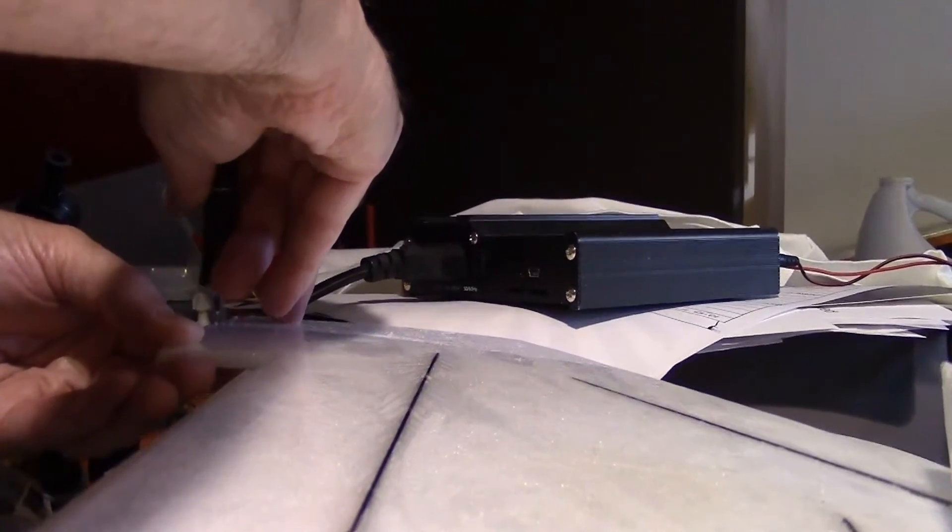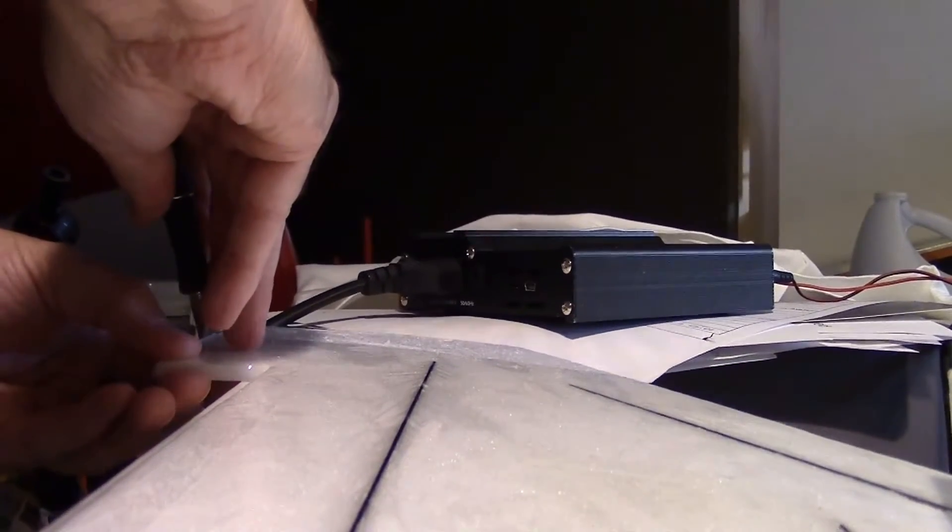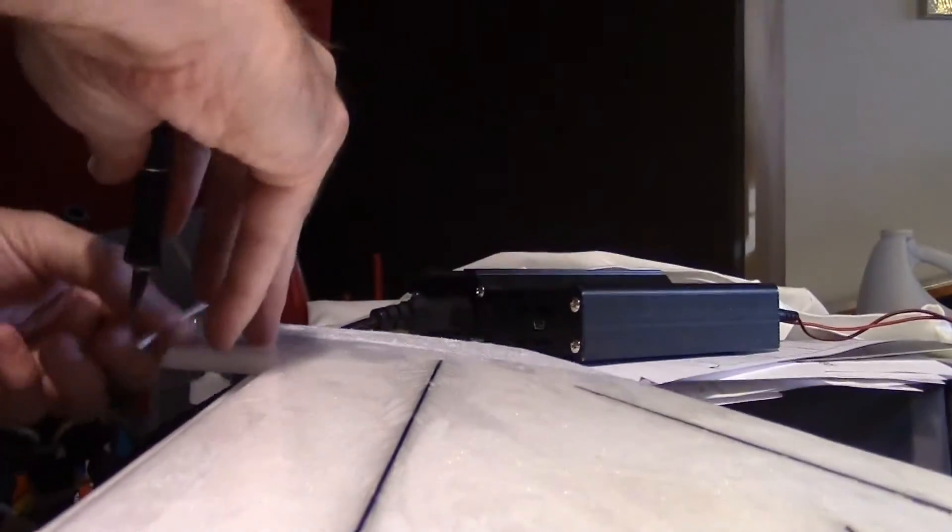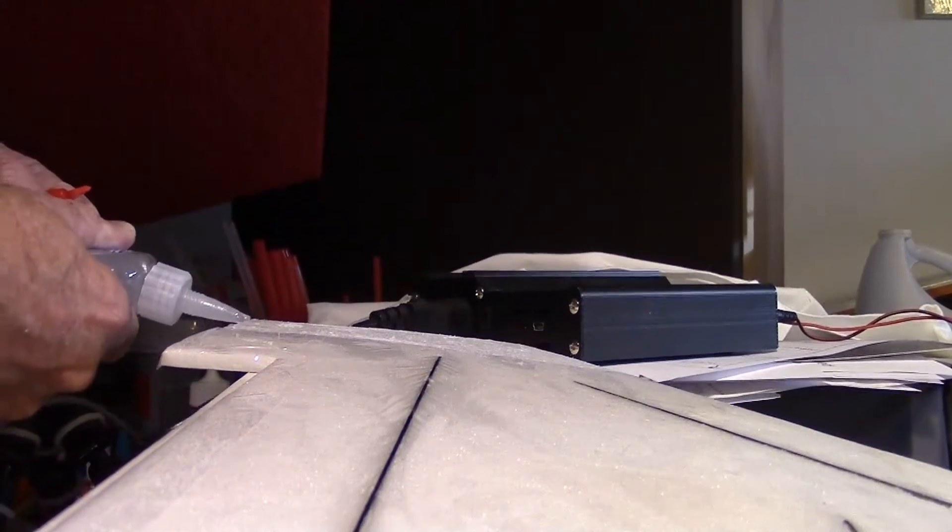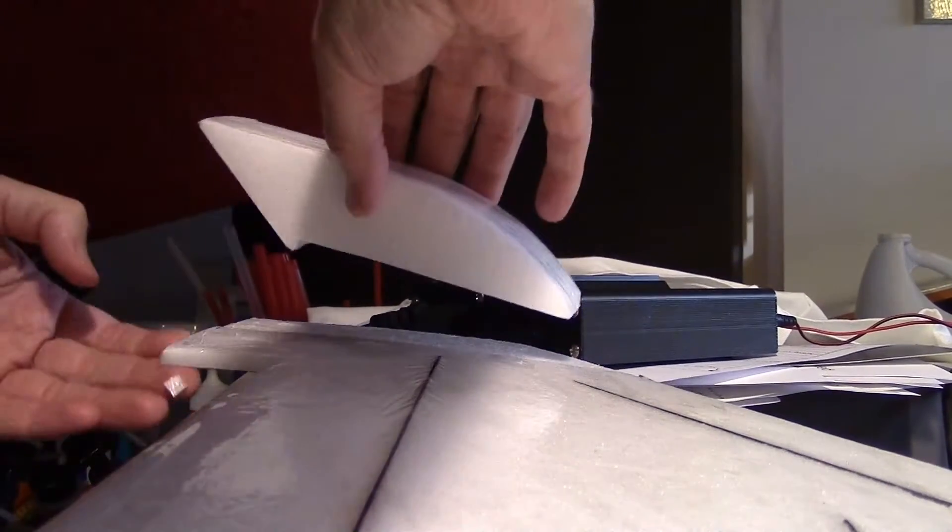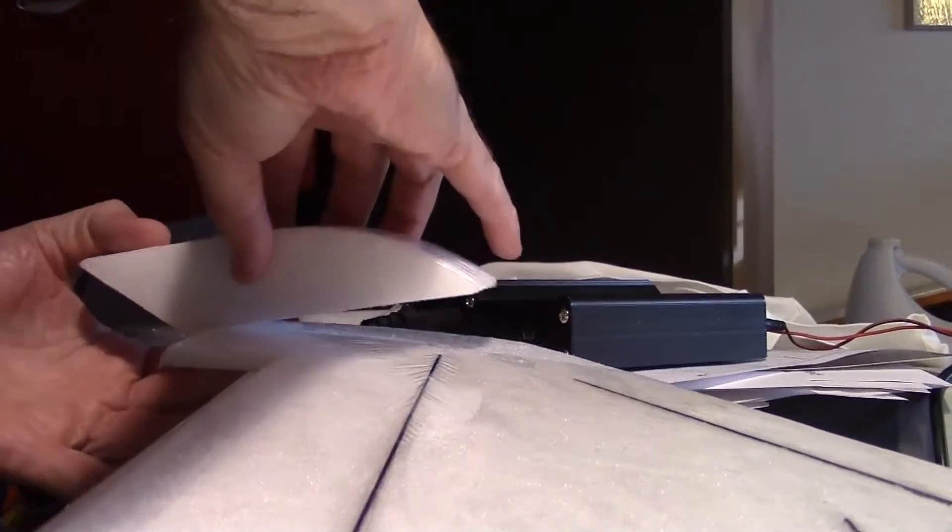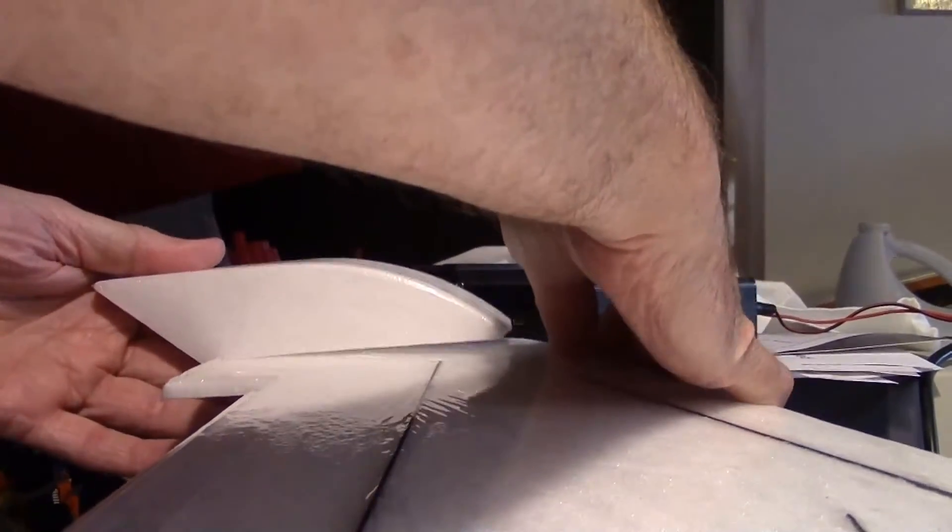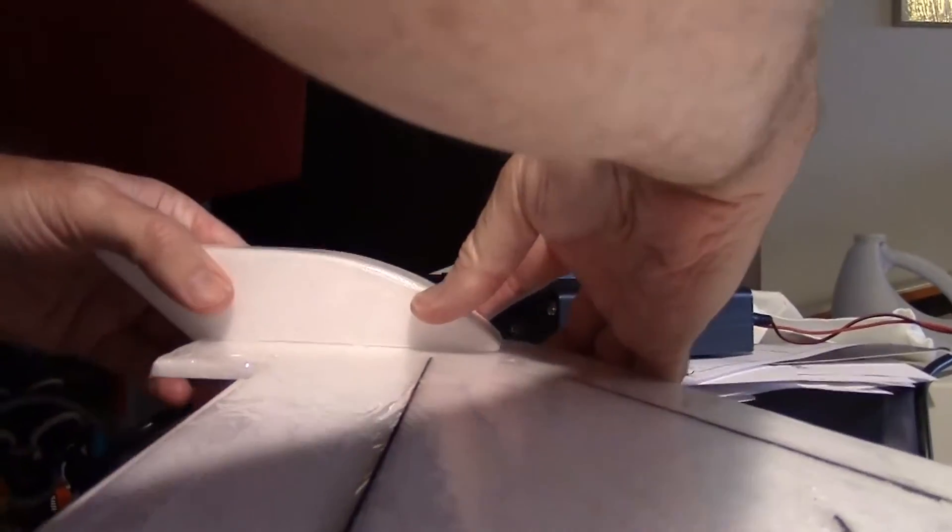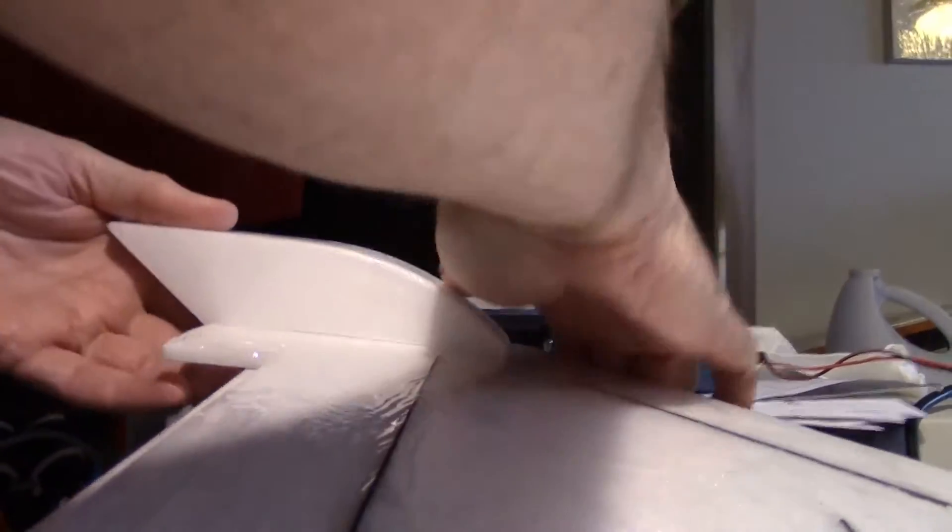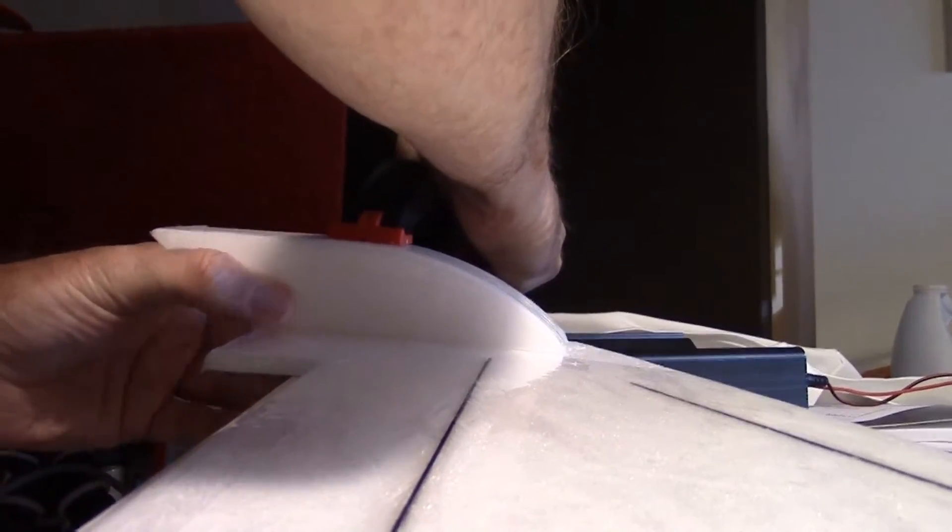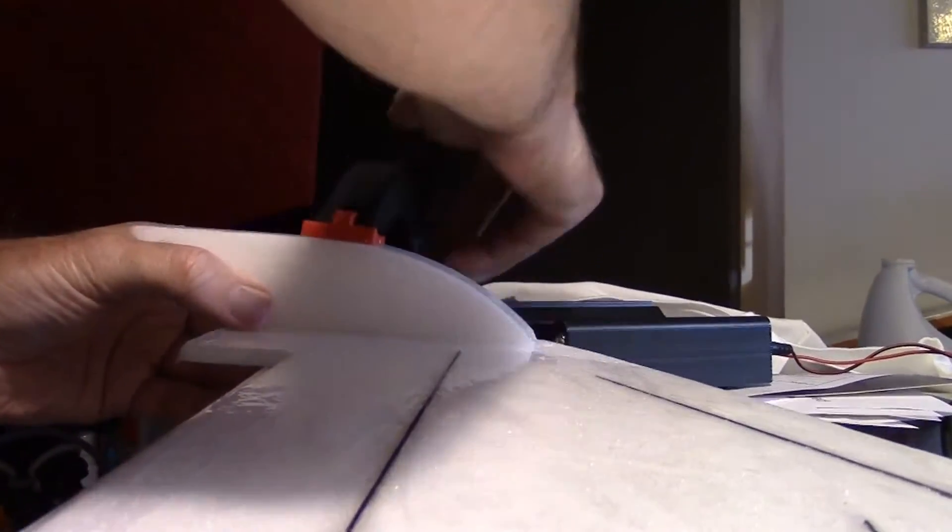Just cutting a little notch out of there. Alright, put it on there. Get it even with the edge of the wing. Alright, getting another clamp to put on here. And there it is.